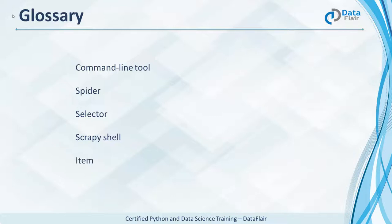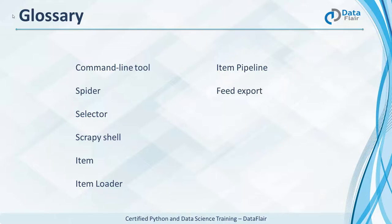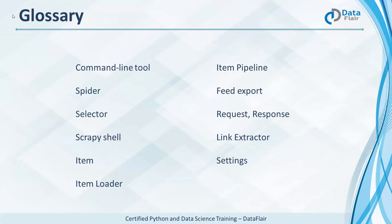An item is the data we want to scrape. An item loader populates the items with the data it extracts. An item pipeline post-processes and stores the scraped data. Feed exports output the scraped data with the help of different formats and storages. A request object is generated in a spider and passed around until it reaches the downloader, which executes the request and returns a response object. Link extractors are classes that extract links to follow from pages. Scrapey also has many settings like concurrent requests and DNS timeout.